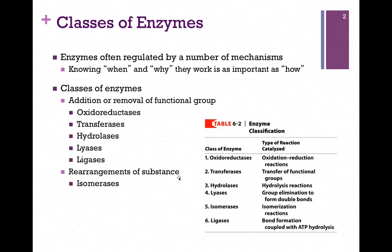Most enzyme classes involve the addition or removal of some functional group. Oxidoreductases catalyze reactions involving oxidation and reduction. Transferases involve the transfer of a functional group from one molecule to another. Hydrolases catalyze hydrolysis reactions, breaking a bond by adding water. Lyases eliminate a group and thereby form double bonds. Ligases involve bond formation and couple that with ATP hydrolysis. We'll talk about each of these in a bit more detail.